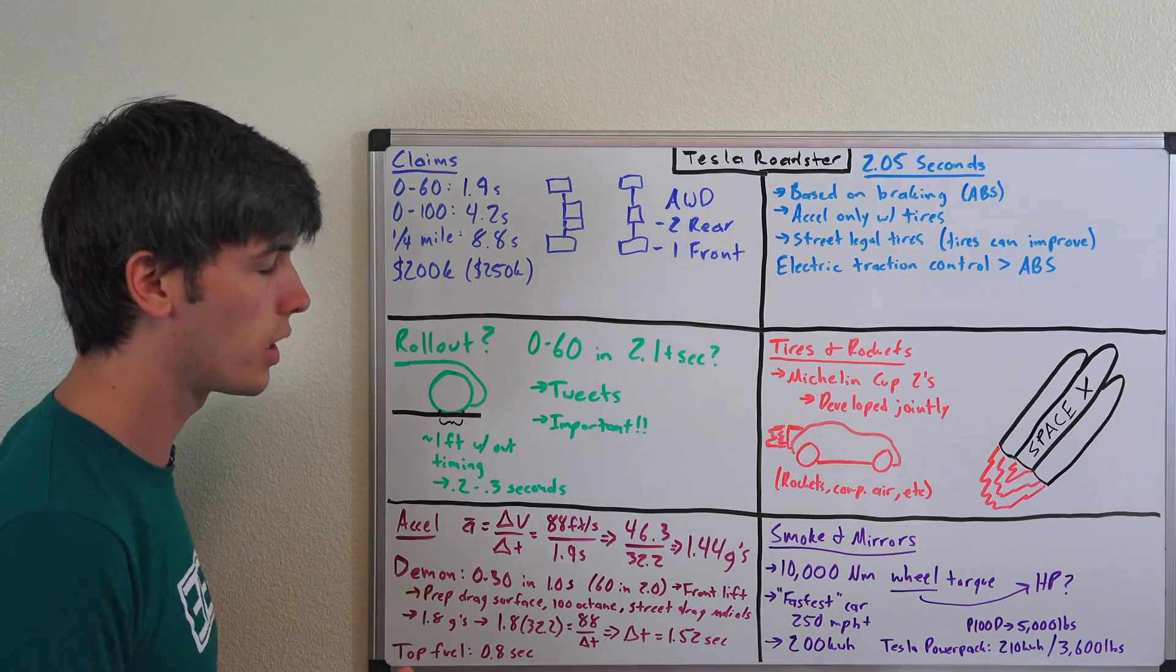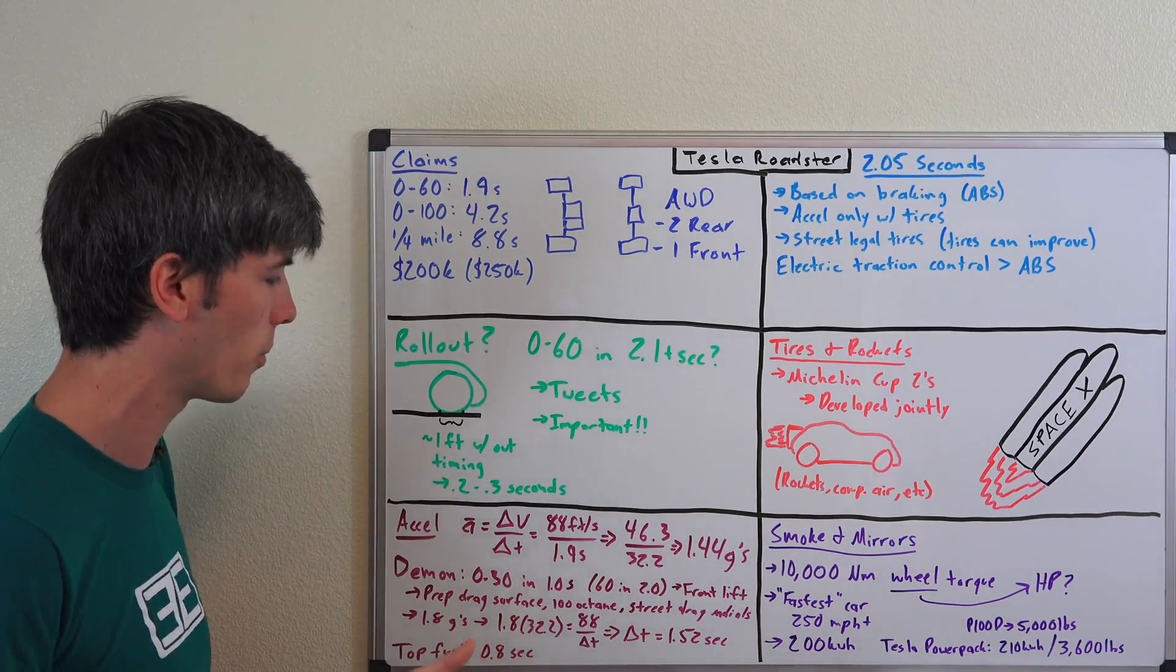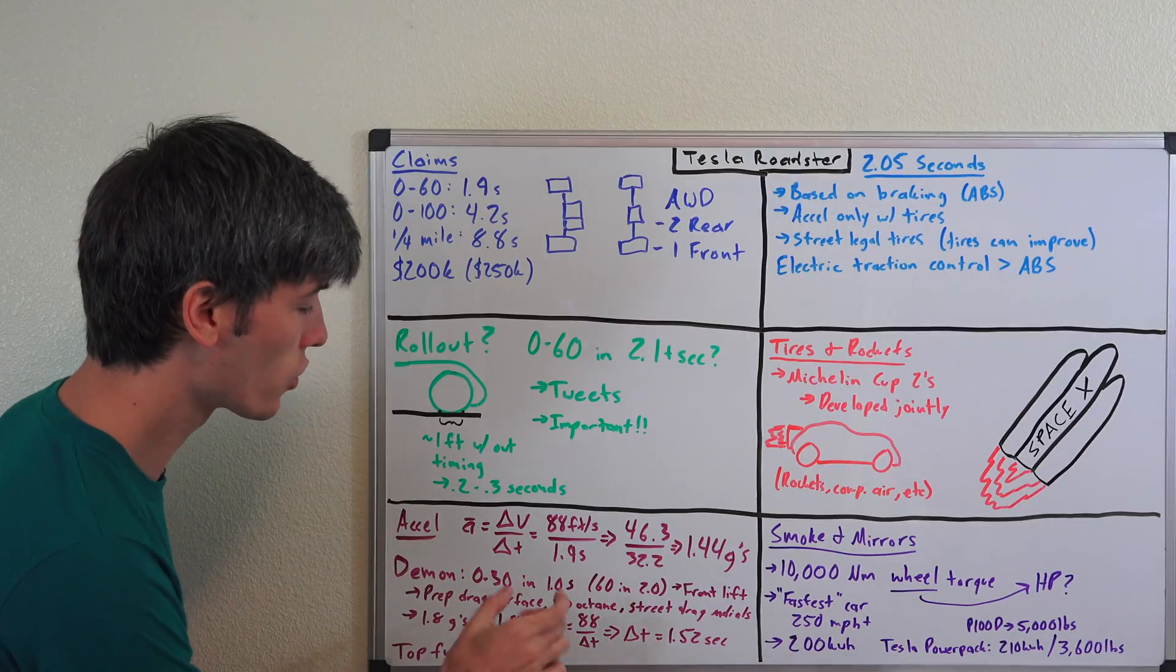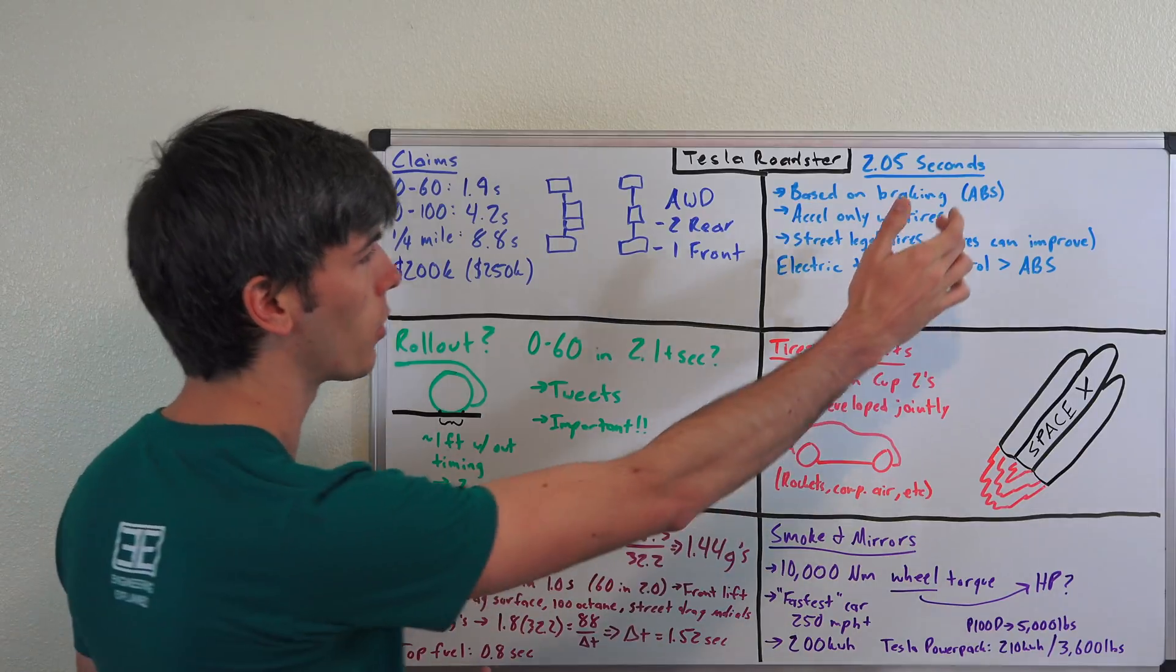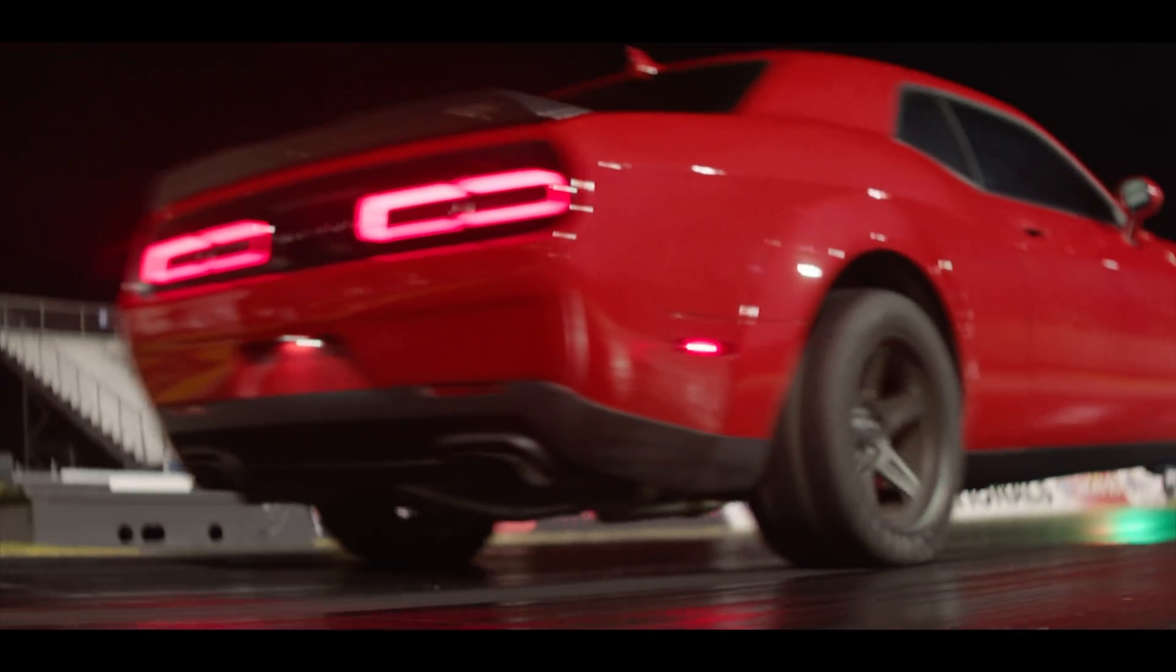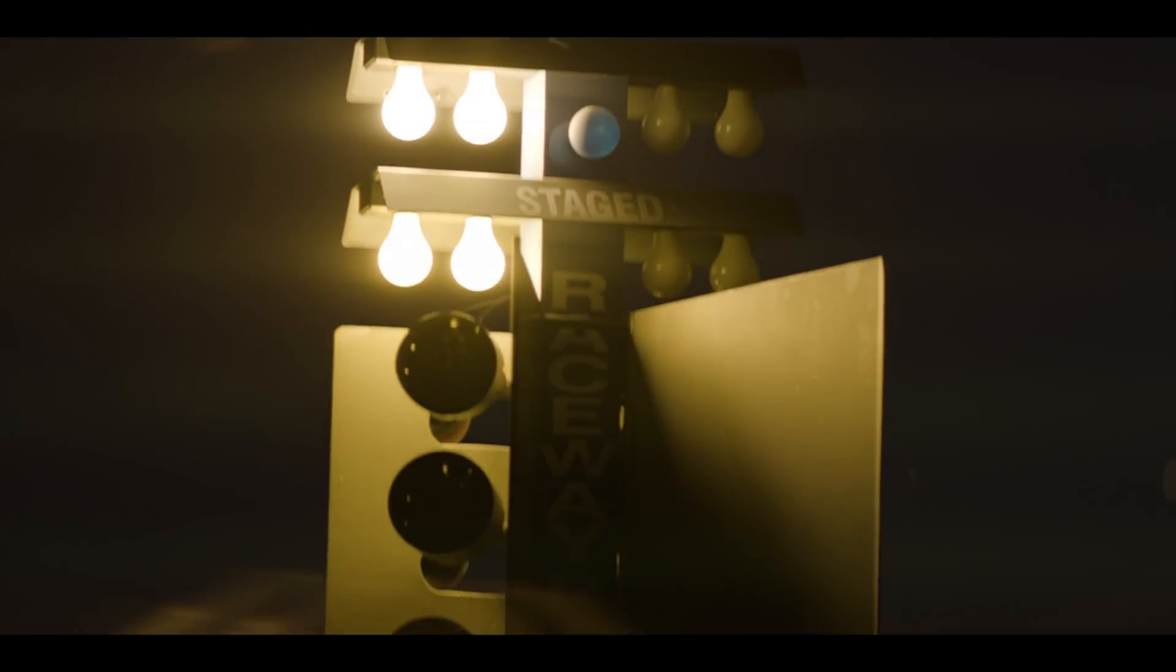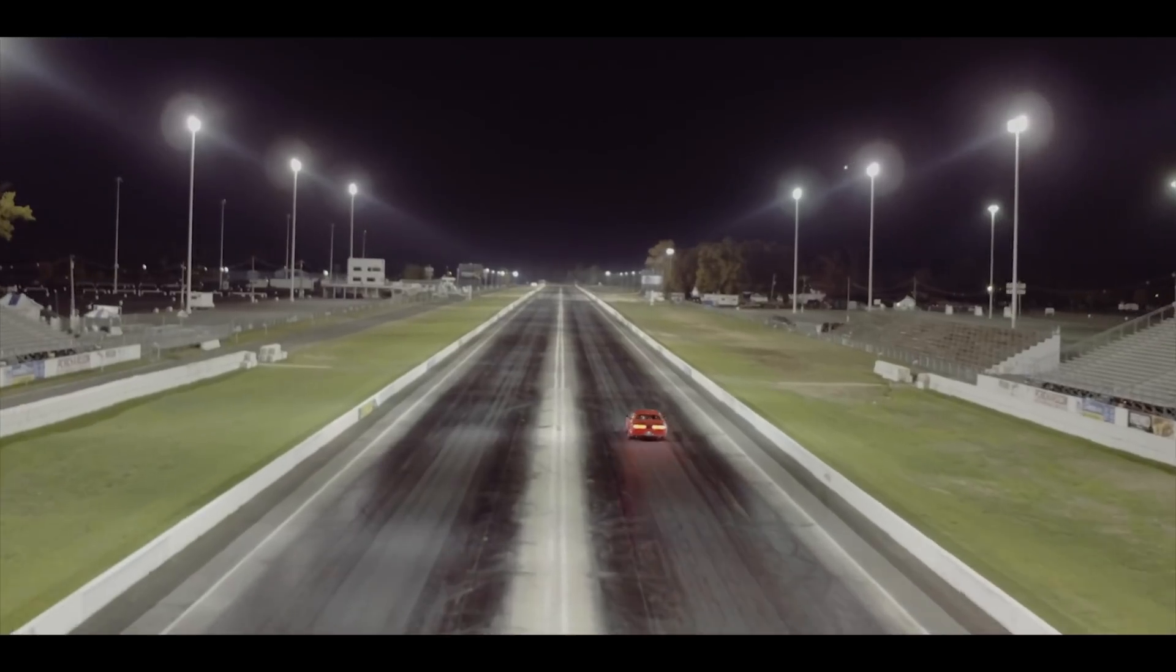Basically the next best thing we have to compare to is the Dodge Demon. Now the Dodge Demon hits 60 in 2.3 seconds. That's none of this rollout nonsense, basically just straight up from 0 miles per hour to 60 miles per hour in 2.3 seconds. It hits 30 miles per hour in just a second. So we know that based on that it would have the grip to do 0 to 60 in 2 seconds flat, which is already faster than that 2.05 claim that I made. As I mentioned in this video, if tire technology improves that time can go down. Well tire technology improved shortly after with the Nitto drag radials that go on the Dodge Demon.